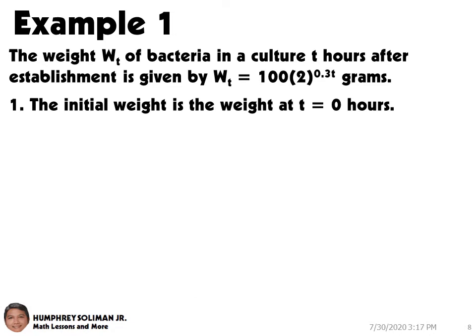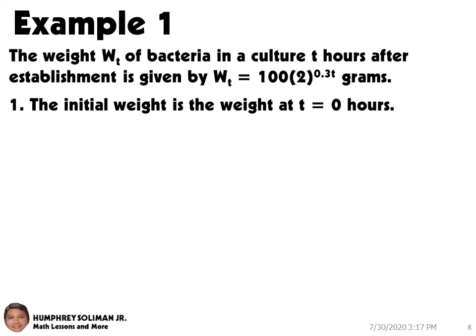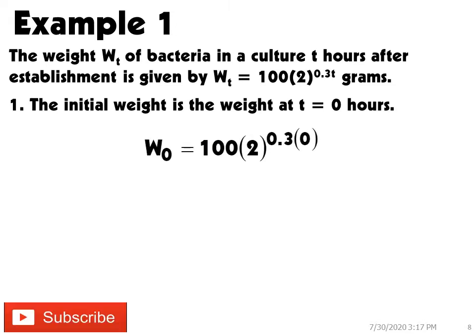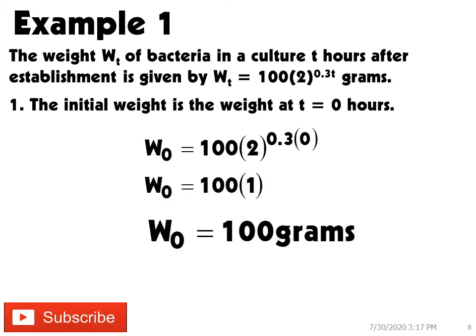In number 1, the initial weight is when t equals 0. So if we substitute t equals 0 in the equation used to model the weight of the bacteria, we will get W0 equals 100 times 2 raised to 0.3 times 0. Therefore, the initial weight is W0 equals 100 grams.